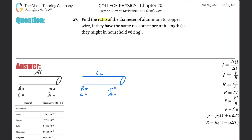Problem number 27: find the ratio of the diameter of aluminum to copper wire if they have the same resistance per unit length, as they might in household wiring. It seems like they didn't give us a lot of information, so this seems a little complicated. What we want to focus in on is that they said the wires have the same resistance per unit length.